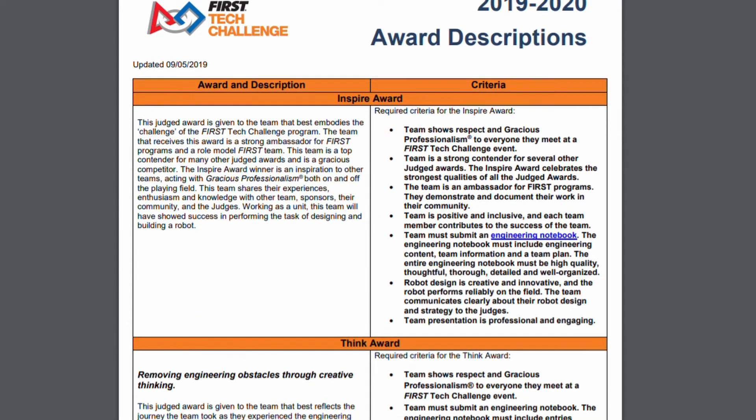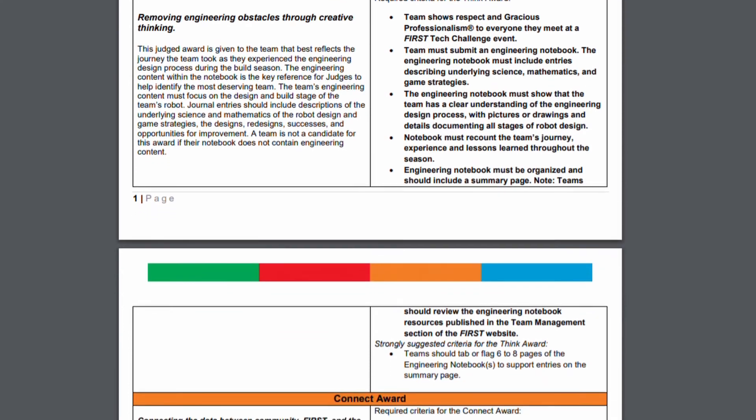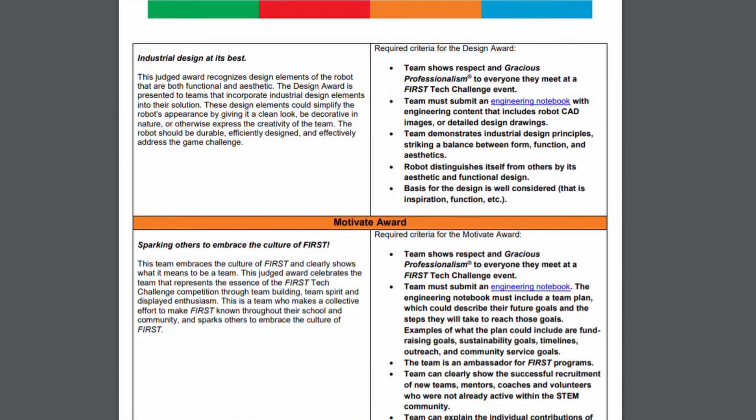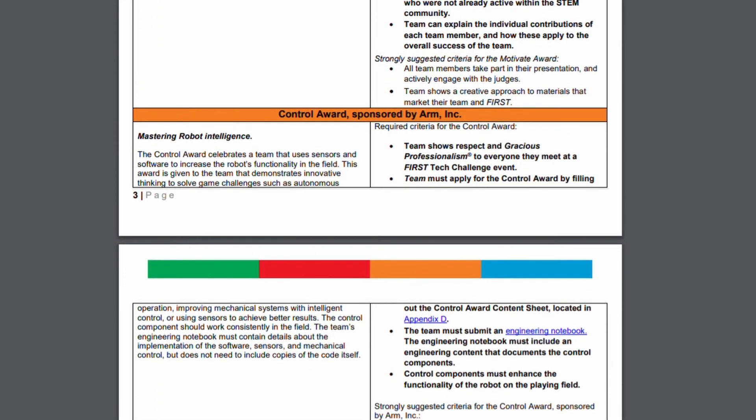These skills will put you in a much better position as you leave the program and enter professional or heavier academic fields. For rookie teams, it's understandably hard to begin organizing efforts toward earning a judged award, so here are some starting points. First, begin rounding out your understanding of the FTC judged awards through official FIRST resources — all the resources you need are in the description below. Next, set some initial goals within your team to discuss how you can set your sights on one or multiple awards so everyone is on the same page.